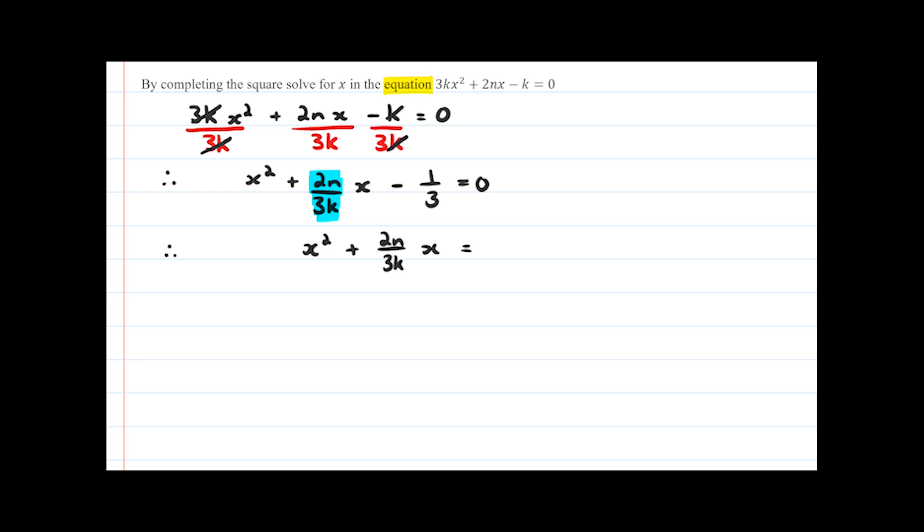Now comes the step where we figure out what number do we need to add to both sides of the equation in order to create a perfect square. Well, we take this b value and go over to the side of your page and we divide that number by 2. So (2n/3k) divided by 2, we'll get the 2s cancelling out and we're just left with n/3k. We square that and get n²/9k². Be sure to note that this plus 2 or this square over 2 or this square over there goes to every single term inside the brackets.